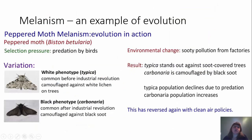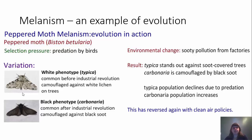One of the last things we're going to talk about in this section is melanism as an example of evolution. The go-to example is the peppered moth. Looking at peppered moth melanism is evolution in action. The natural type is the white form, called typica, and it was common before the Industrial Revolution. The selection pressure that demonstrates evolution is the predation of these moths by birds.